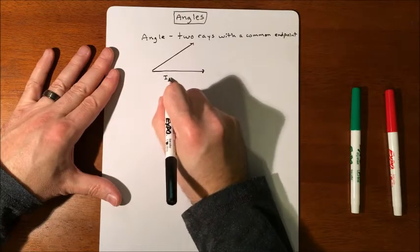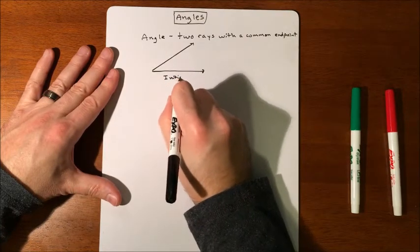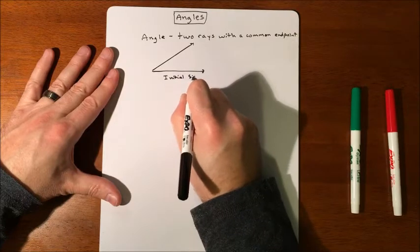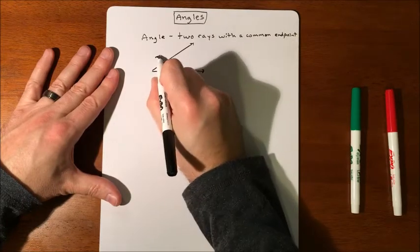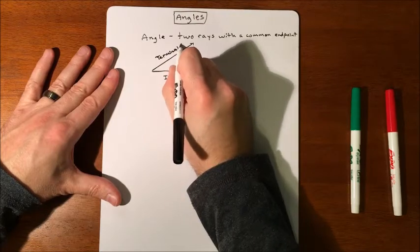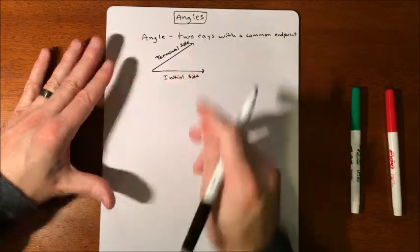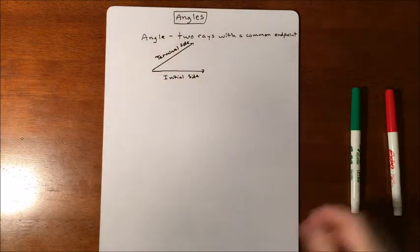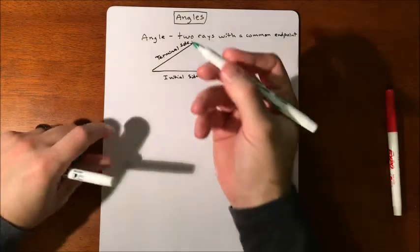So this is known as the initial side. This is known as the terminal side. And then the angle in between, but angles can be described in two different directions. Direction matters.